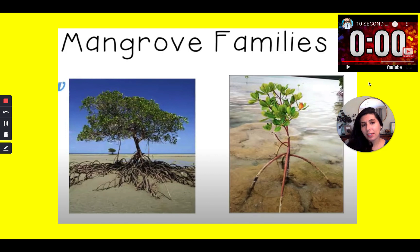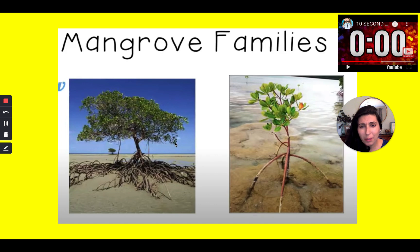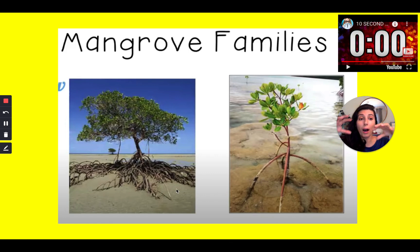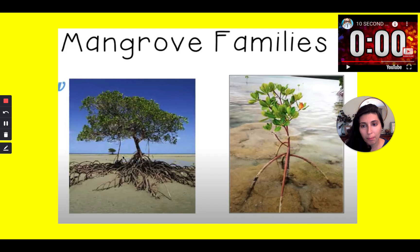What did you notice that's the same? One thing I'm noticing is that the leaves are very similar. It's a little hard to see the leaves on the adult tree since this picture is taken from further away, but it looks like they both have tiny little pointy leaves and the leaves are green on both. Another similarity is that the roots of both trees come up out of the ground — that's something unique to the mangrove family. Another similarity is that both are growing in or around water.